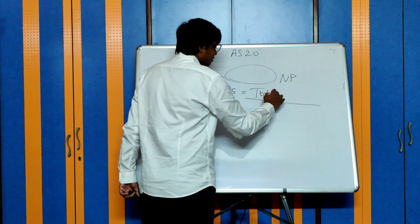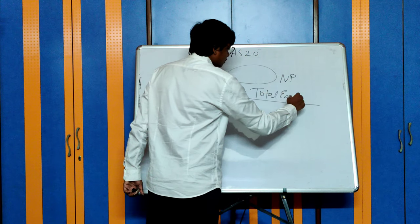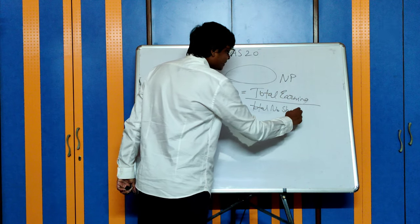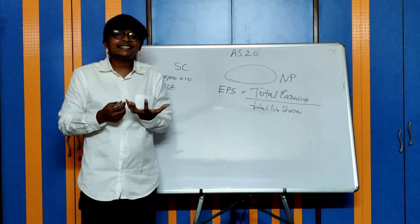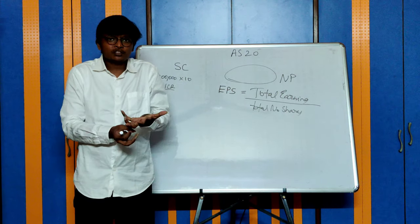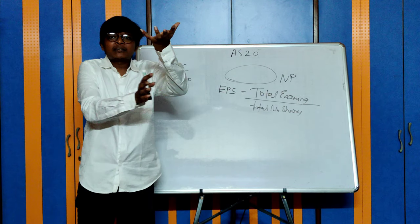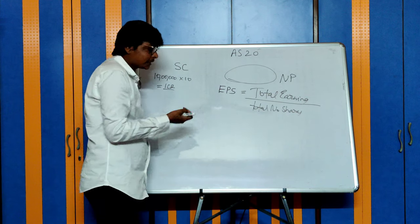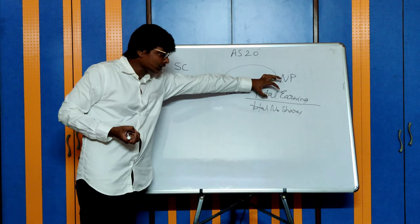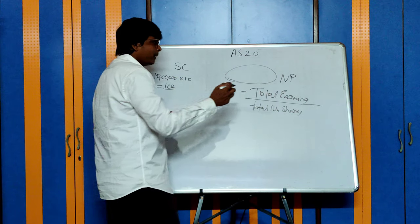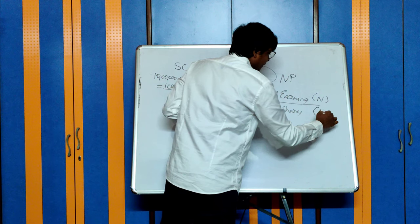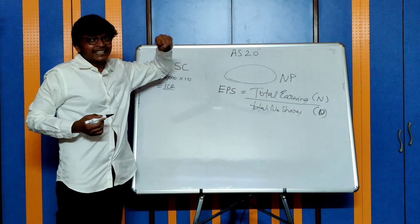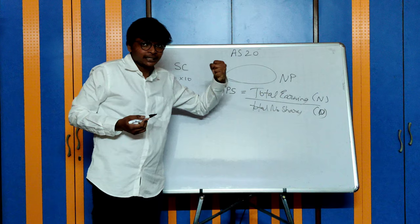The basic formula for earnings per share is: total earnings divided by total number of shares. Think of it like a 1 kg cake shared among 5 people - numerator is the cake, denominator is 5 people, split equally. So earnings per share = total earnings divided by total number of shares. However, the numerator and denominator are not that simple - you need to understand what to consider in each.